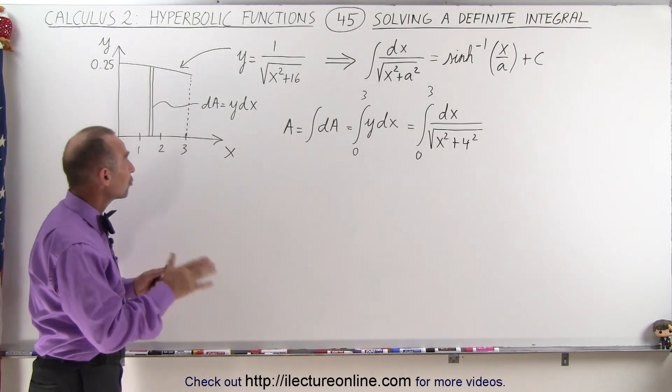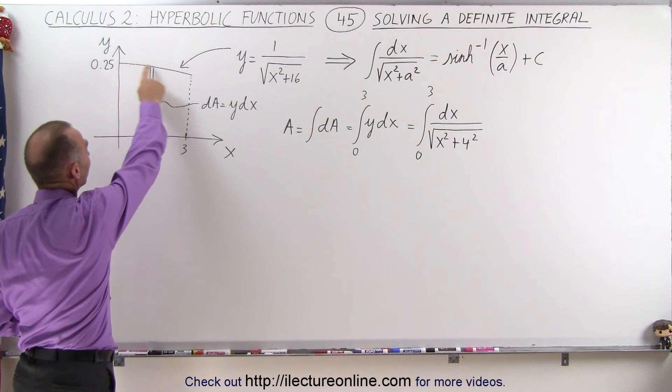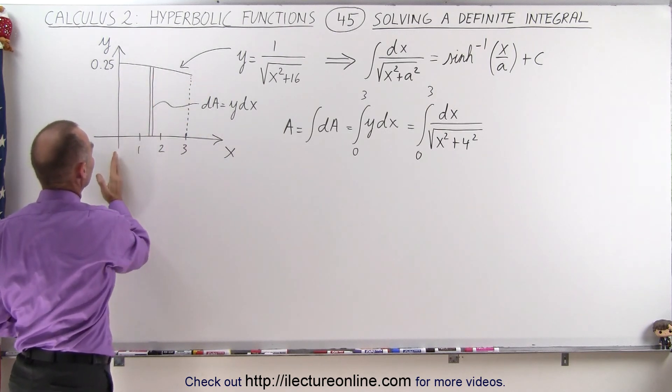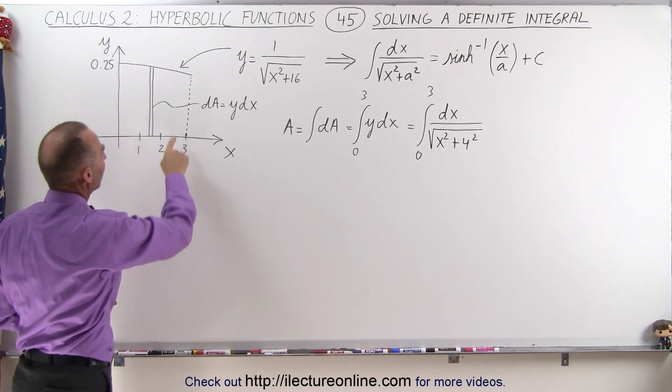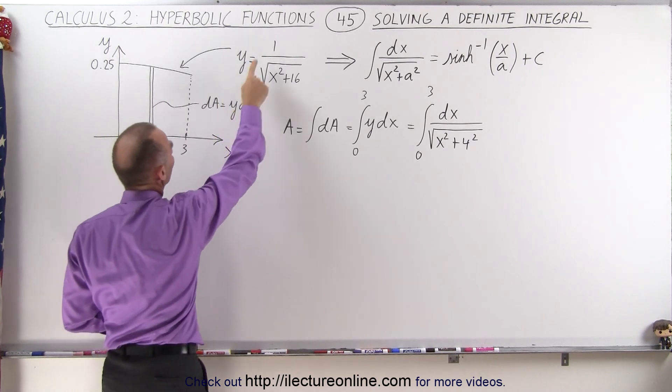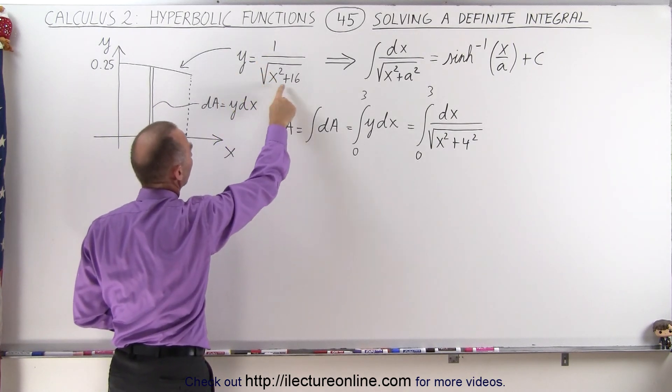In this case, what we're trying to do is find the area underneath this curve between x equals 0 and x equals 3, and the curve is defined by y equals 1 over the square root of x squared plus 16.